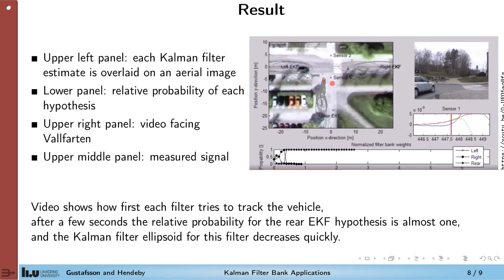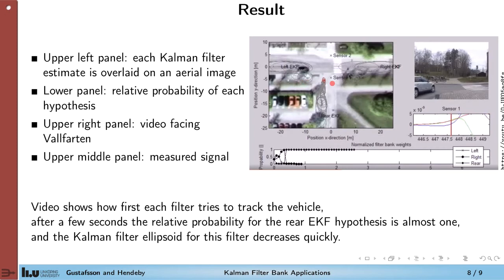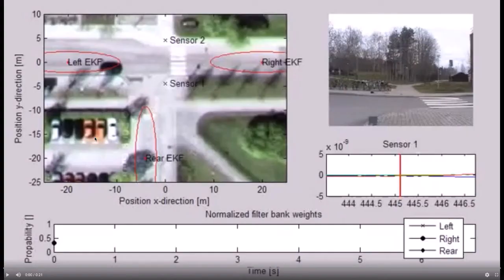So this plot shows four panels. What we see here is the most interesting one. We have the estimate from each Kalman filter overlaid on an aerial image. Here's the video image of what happens. It's a kind of ground truth. We can validate that the filter works. Here you will see the sensor signal from sensor one. And this is interesting because it shows the relative probability of each Kalman filter. So let's start the video now.